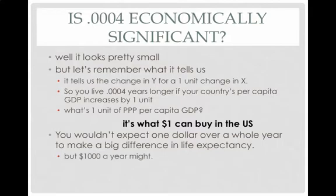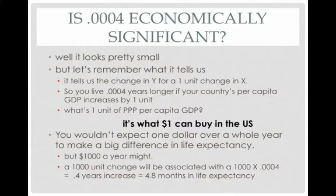A thousand dollars a year might make a difference, though. Ask: does my data vary by a thousand dollars? Yes — GDP per capita varies by a lot across countries. So for a $1,000 increase in per capita GDP, that means 0.4 years of additional life expectancy, which is 4.8 months. That starts to be economically significant — it would matter to people.